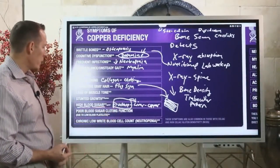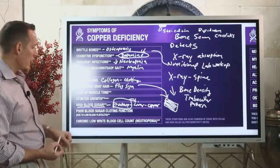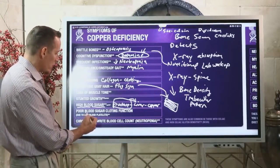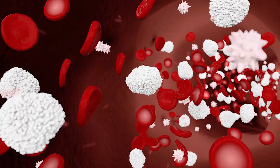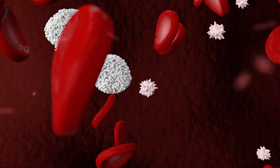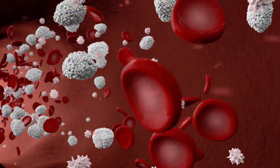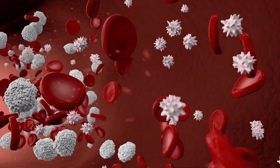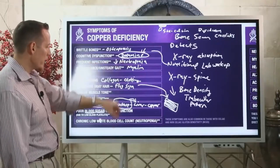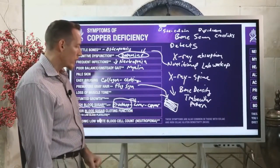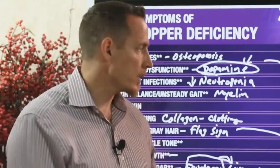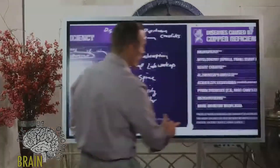Copper is also necessary to help form platelets, which help clot the blood. Elevated blood sugar can interfere with how platelets function, and copper deficiency itself can also contribute to low platelet levels. Chronic low white blood cell count is also a concern — if your white blood cell counts are in the twos or threes, or your neutrophils are consistently low on your CBC, that could potentially indicate copper deficiency.